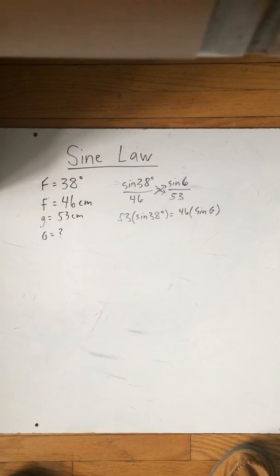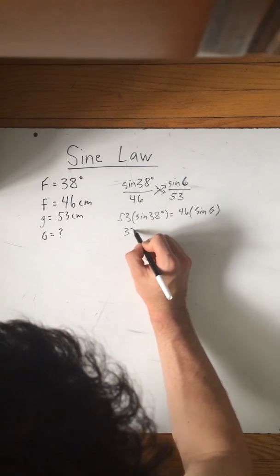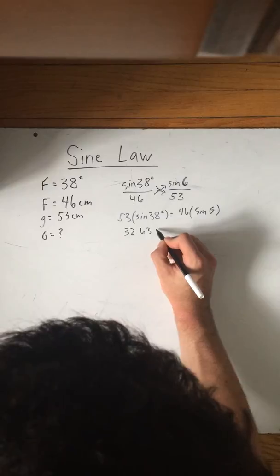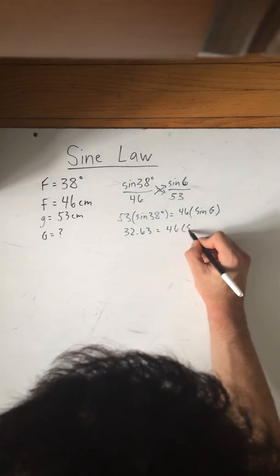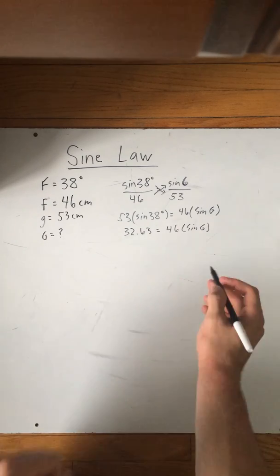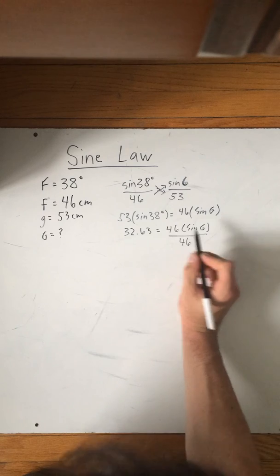Now we have to multiply 53 by sine 38, which gets us, if you put that into your calculator, 32.63 is equal to 46 times sine G. Now we're trying to isolate for sine G. So the next step would be divide both sides by 46.